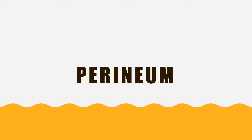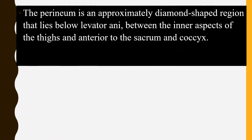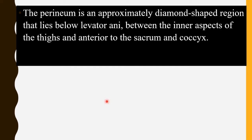So what is the perineum? The perineum is an approximately diamond-shaped region that lies below the levator ani, between the inner aspects of the thighs, and anterior to the sacrum and coccyx. It is a diamond-shaped area which is exactly present at the pelvic outlet. We have the pelvic inlet, pelvic cavity, and pelvic outlet.